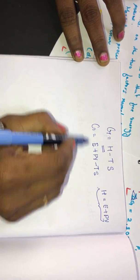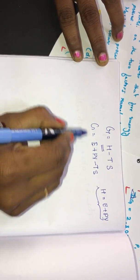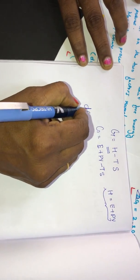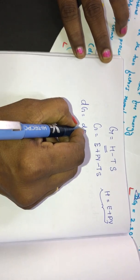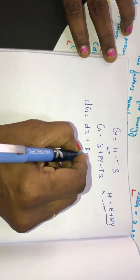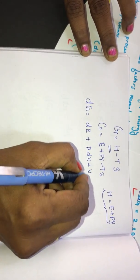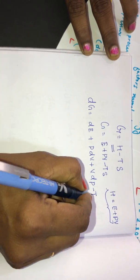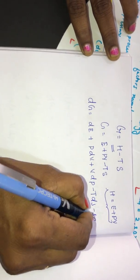As the next step, we differentiate on both sides, so that we get dG is equal to dE plus P dV plus V dP minus T dS minus S dT.